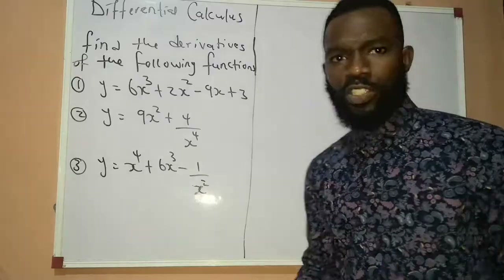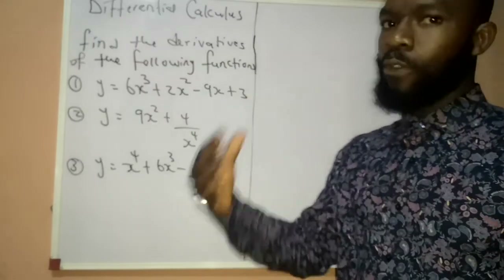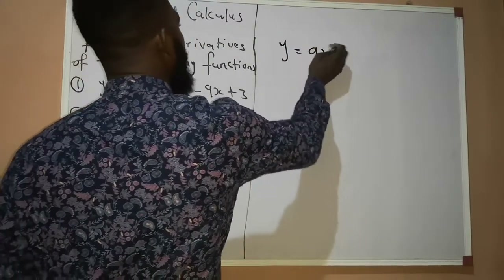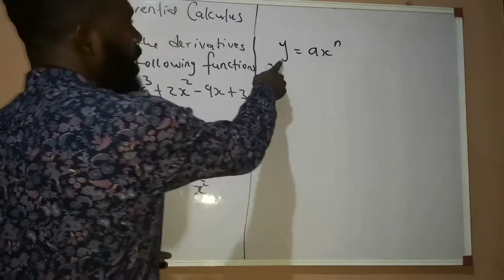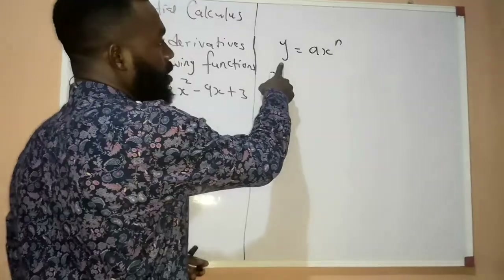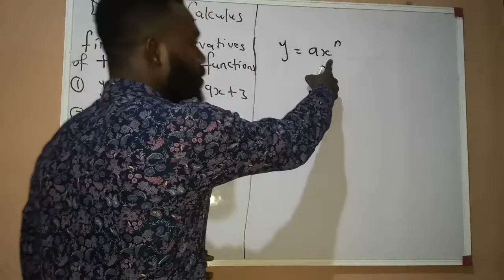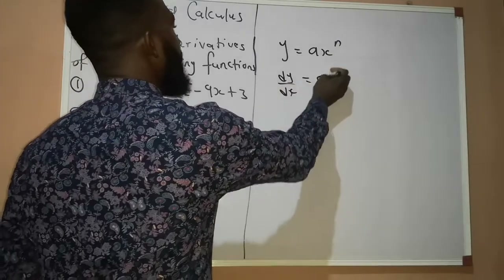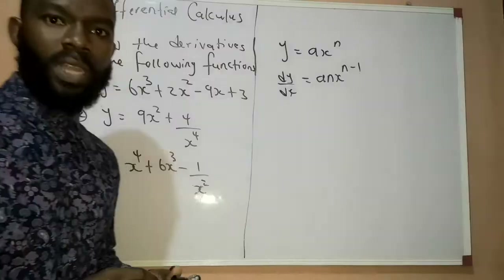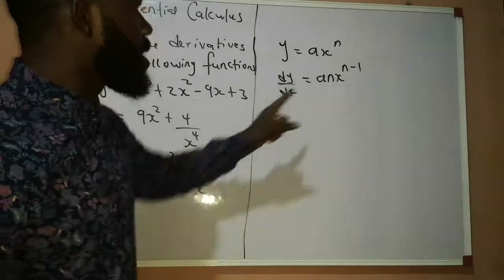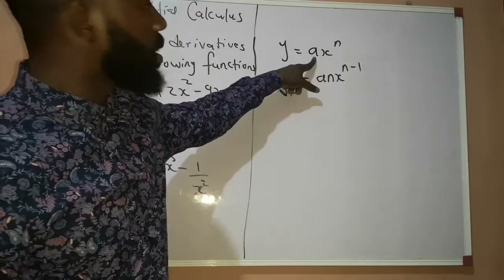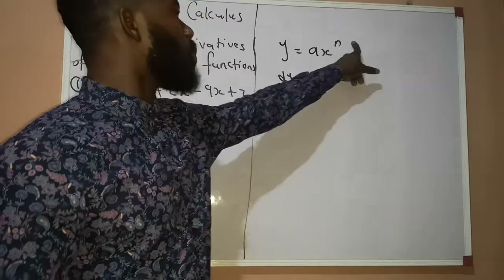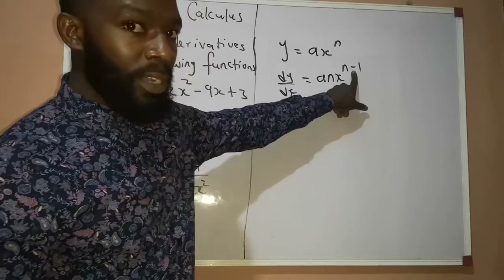Now the first thing you need to understand about differentiation is that there is actually a general formula which says: if y is equal to ax raised to the power of n, now if you should take the derivative of y with respect to x, which is dy over dx, you will get anx raised to the power of n minus 1. I used the power to multiply the coefficients, and n times a gives us an. And then you subtract 1 from the power, which gives us n minus 1.